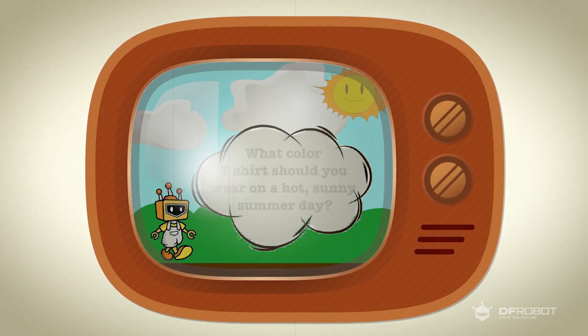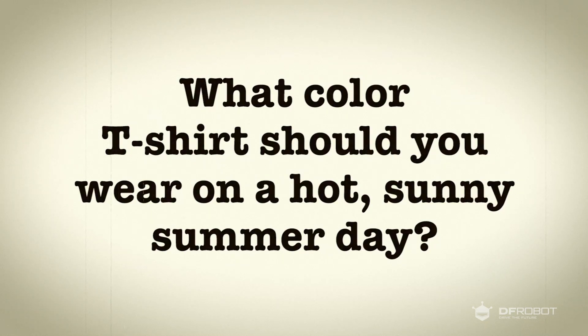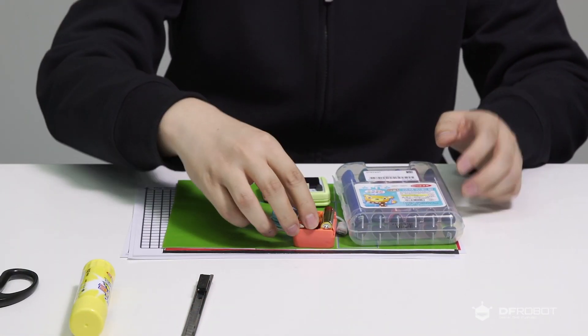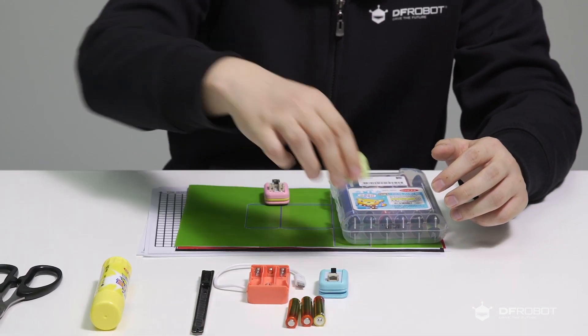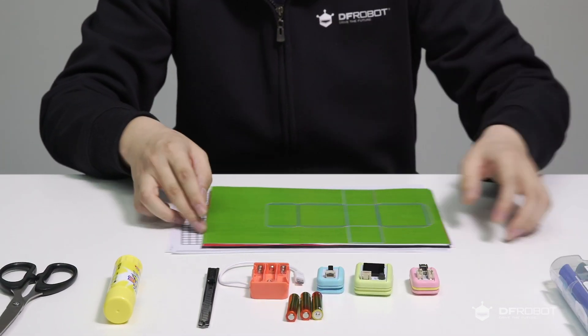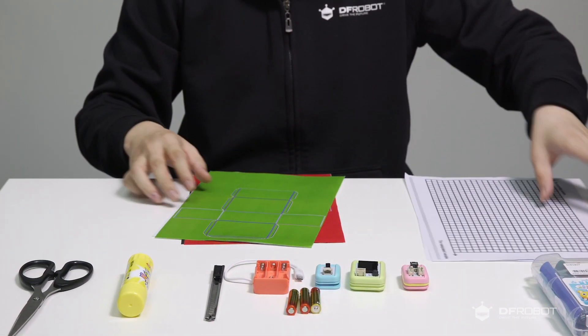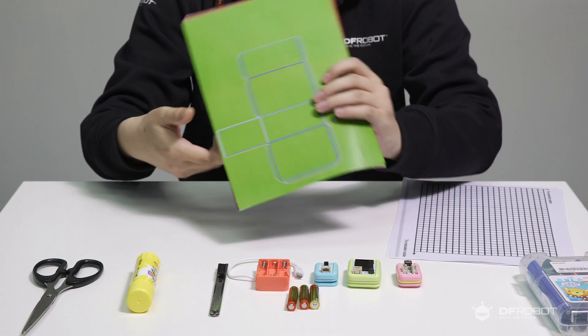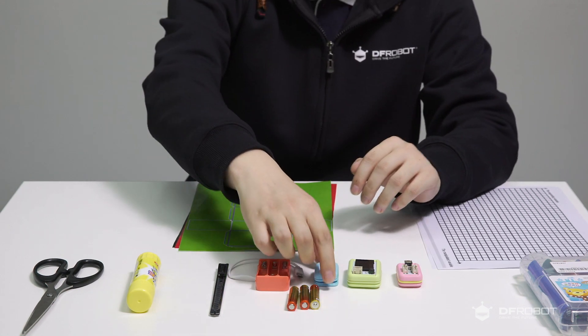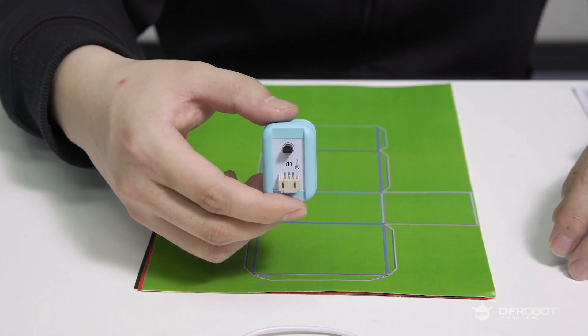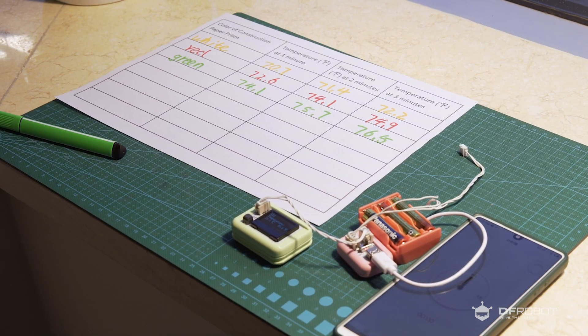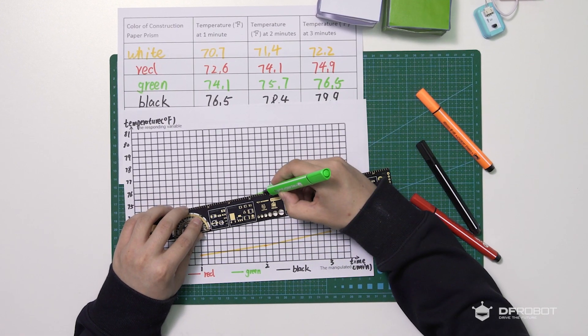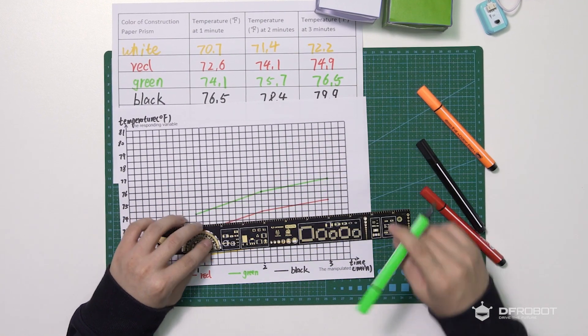So today we're going to discuss the issue of dressing. We will develop an explanation as to why certain color clothing can increase or decrease our perceived degree of warmth or coolness when playing outside. In this activity we will use a variety of colored pieces of paper and measure the amount of light absorbed with the Boson temperature sensor. Let's work together to graph the data from your experiment and develop a set of guidelines which will explain how clothing color can help to keep you cool or warm when you're outside.